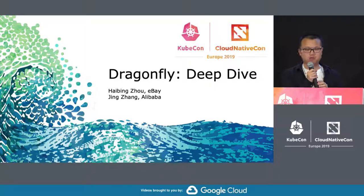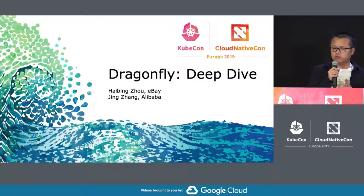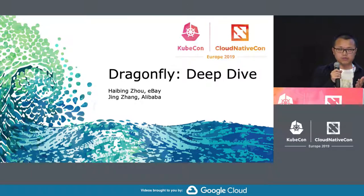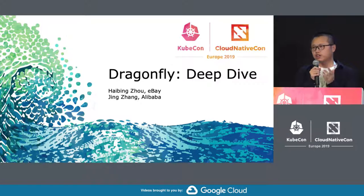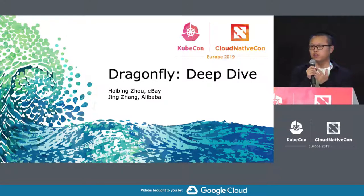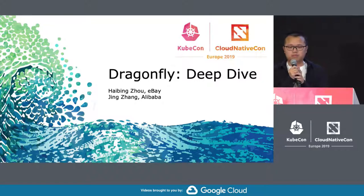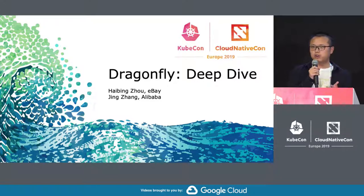In this session, we have three parts. One, we are going to go through why we need a specific system for doing image distribution and file distribution. Secondly, I'm going to do an overview of what is Dragonfly, how many components do they have, and how does it work together. And then, my partner will give a more detailed introduction on how image pulling works in Dragonfly. And finally, we have a demo.